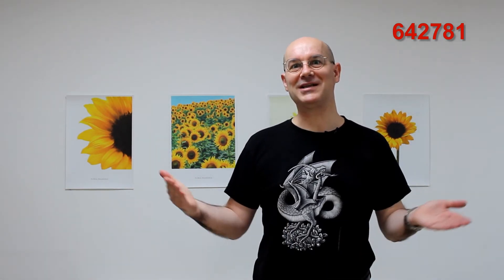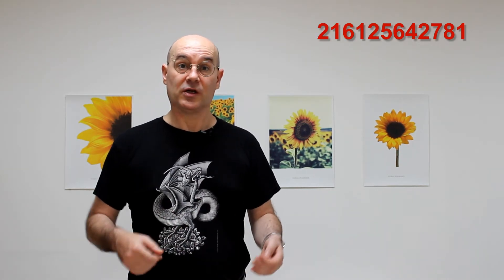We continue with 4 cubed, which is 64. And then we get this number, which is a multiple of 23. So, it's still not prime. We continue with 5 cubed, which is 125. And 6 cubed, which is 216. And both of them give us a multiple of 3.